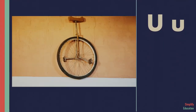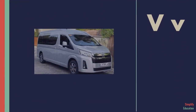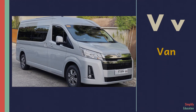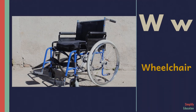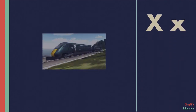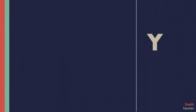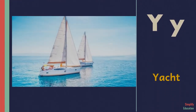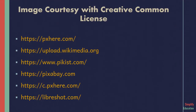U for unicycle. V for van. Z for zeppelin. Thank you.